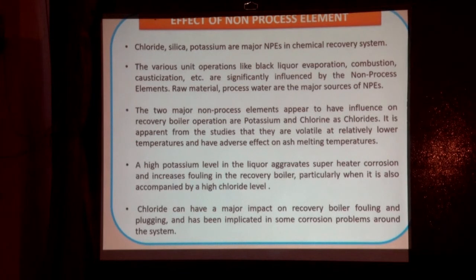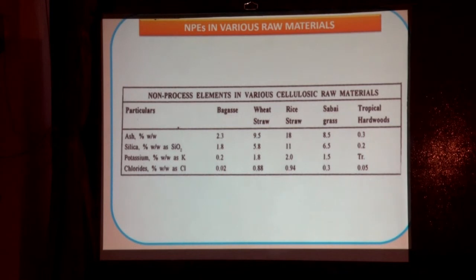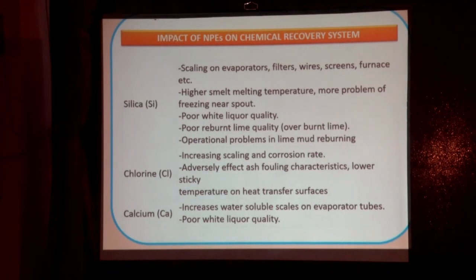Regarding silica effects on different black liquors: rice straw has the highest silica, which causes silica scaling in evaporators, filters, wires, and springs. Poor white liquor clarity results because silica forms calcium silicate, which has a very poor settling rate. Calcium silicate carries over with white liquor and creates problems throughout operations. Regarding calcium: there are two types in black liquor — soluble and insoluble. Calcium has reverse solubility at higher temperatures; unlike most compounds, solubility of calcium compounds decreases with higher temperature, causing scaling at the first evaporator effect where temperatures are 130–175°C.